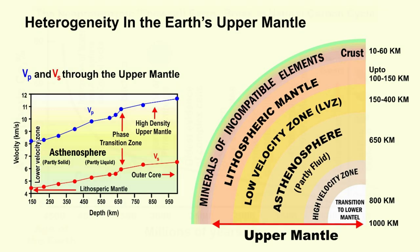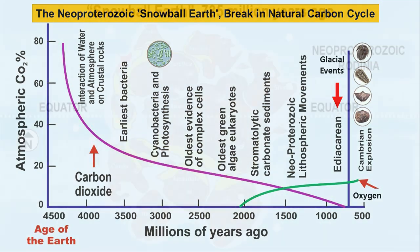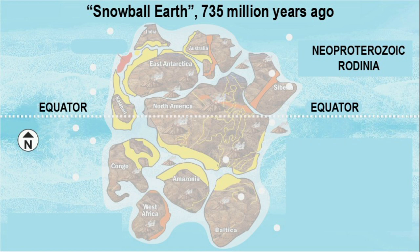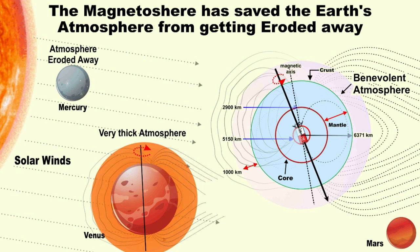The older epoch, between 717 to 659 million years ago, is called the Sturtian glaciation epoch, and the succeeding short Marinoan epoch was for about 5 million years between 640 to 635 million years ago. Both these chronometrically dated epochs, one after the other, were widespread and encircled the entire globe.